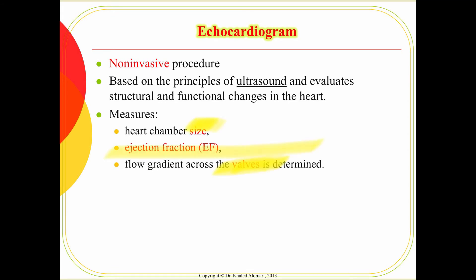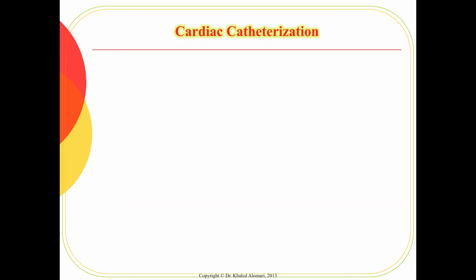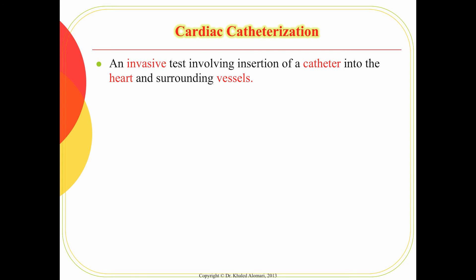The echocardiogram primarily measures ejection fraction — the percentage of blood that leaves the heart with each beat. Normal ejection fraction is 50–70%. It is reduced in cases of systolic heart failure. Ejection fraction is measured by the echocardiogram and is a key indicator of cardiac function.